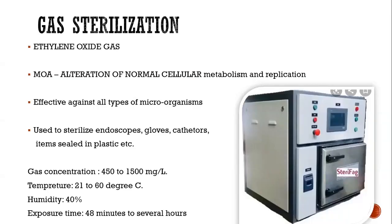Now gas sterilization. Ethylene oxide gas chambers are used for sterilization. The mechanism of action is alteration of normal cellular metabolism and replication through alkylation of protein, RNA, and DNA. Moisture and heat sensitive equipment can be sterilized through it and it is effective against all types of microorganisms. It is used to sterilize endoscopes, gloves, catheters, and items sealed in plastic packaging. The effectiveness depends on gas concentration of 450 to 1500 mg per litre, temperature of 21 to 60 degrees centigrade, exposure time of 48 minutes to several hours, and humidity of 40%.